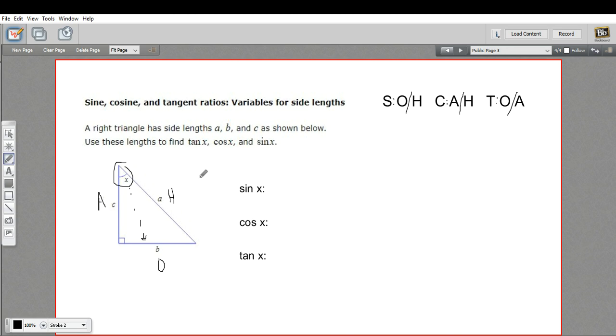Now we're ready to set up these ratios. The sine of x is opposite over hypotenuse. The opposite is b and the hypotenuse is a, so sine x equals b over a.